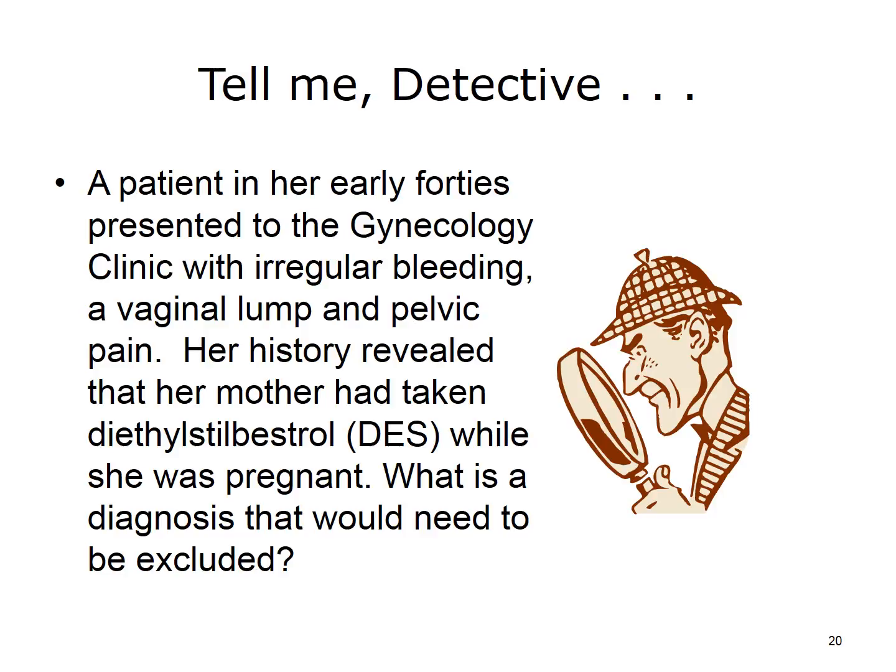Did you guess vaginal cancer? The risk factors for vaginal cancer include being over age 60, having HPV, and having a mother who took diethylstilbestrol, or DES, while pregnant. The symptoms of vaginal cancer include bleeding that is irregular, lumps in the vagina, and pelvic pain. Treatment options include surgery, radiation, and chemotherapy.